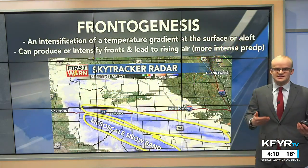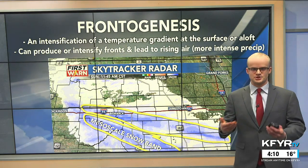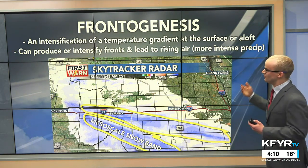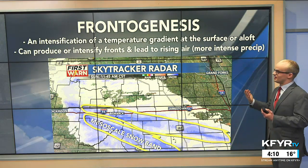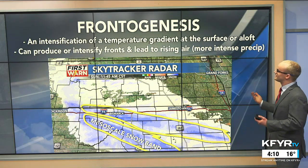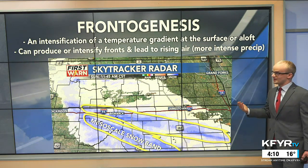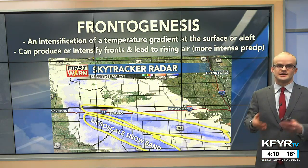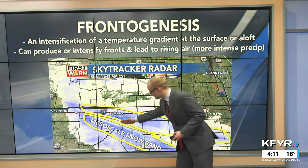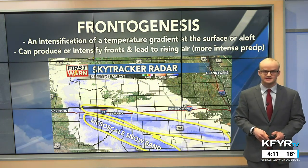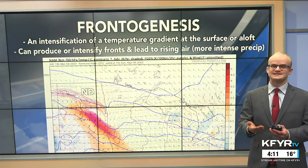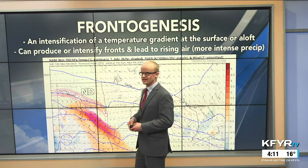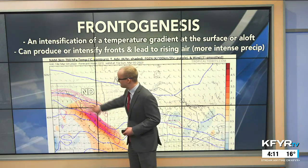Within these mesoscale snow bands, we have a process called frontogenesis. Breaking it down — there's the word "front" in there, which in meteorology means a boundary. Frontogenesis means an intensification of that boundary — an intensification of the temperature gradient at the surface or aloft — which produces or intensifies these fronts, leading to a lot more rising air. When we have rising air in the atmosphere, that creates more intense precipitation. On Sunday, there was a lot of frontogenesis within those snow bands, creating more intense snowfall rates and bigger snowflakes.